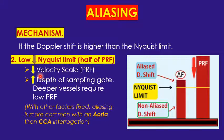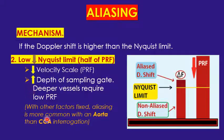Lowering the scale lowers the PRF and can induce aliasing. Also, scanning a deeper vessel elongates the pulse repetition period, which lowers the PRF (since PRP and PRF are inversely related), increasing the chance of aliasing. A common exam question: which is more likely to produce aliasing, scanning the aorta or the CCA? The aorta has more chances of aliasing than the CCA.